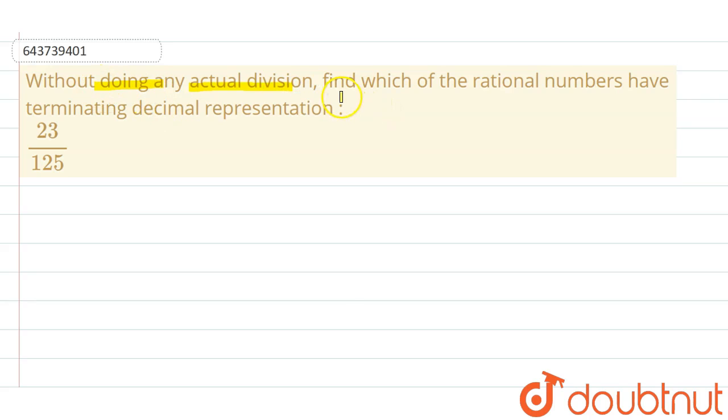doing actual division, find which of the rational numbers have terminating decimal representation. So the given rational number is 23 upon 125.